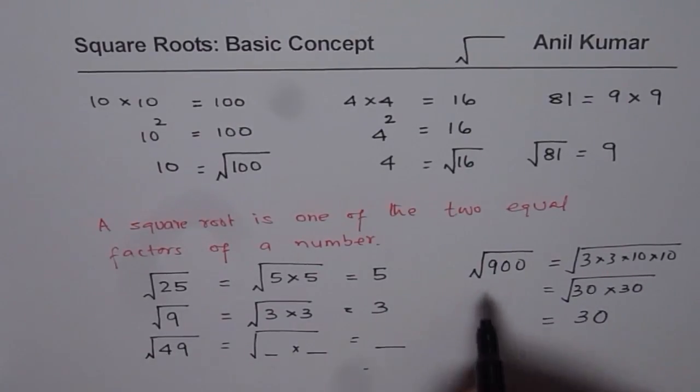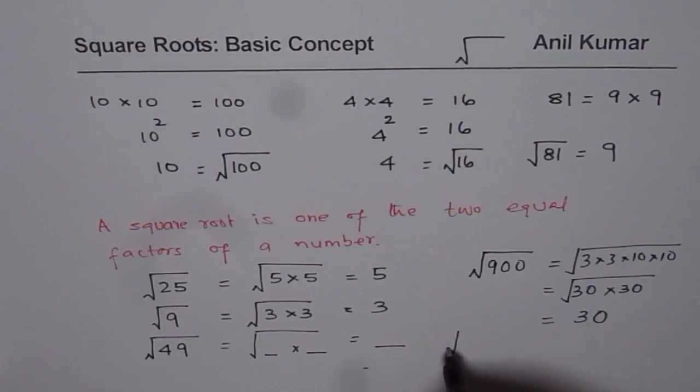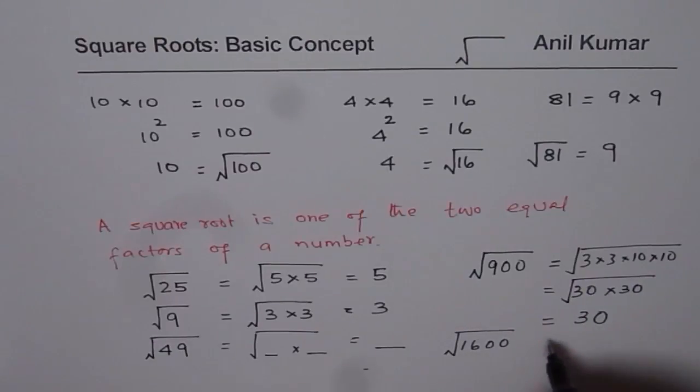Now apply this method to find square root of 1600. Square root of 100 is 10, square root of 16 is 4. So 4 times 10 should be your answer. So anyway, try it out. I hope this helps you to understand the very basic concept of finding or mentally calculating square root of numbers. We'll move on to the next exercise, which will give you some more practice. Thank you and all the best.